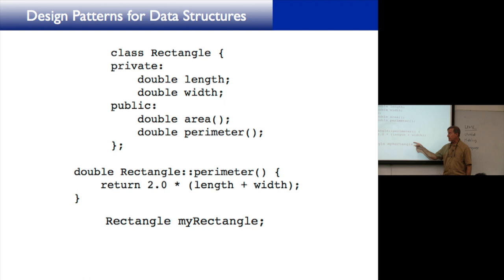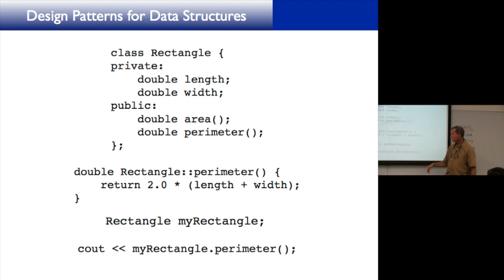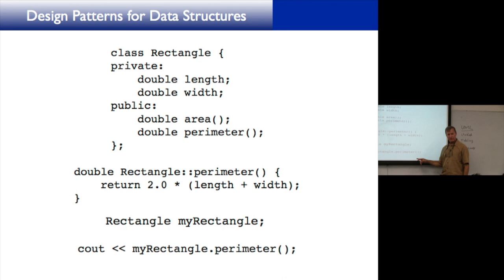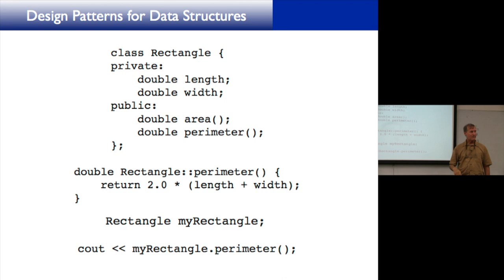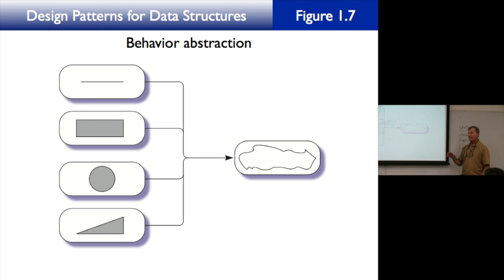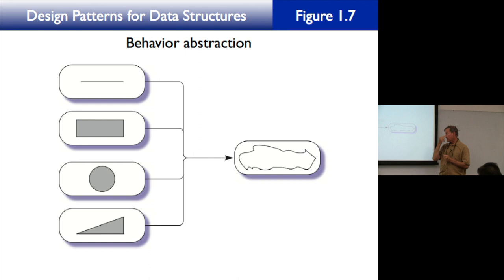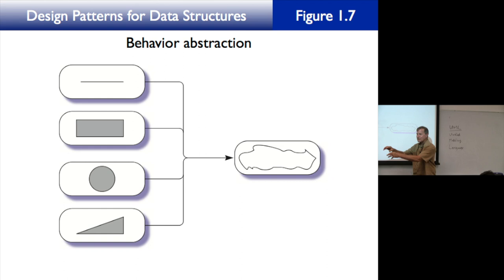One abstract shape could be a rectangle, a circle, a line, or a right triangle. We combine these classes into one abstract class — that's behavior abstraction, the highest level. The UML symbol for this is an open triangle arrow for inheritance. Figure 1.7 shows that Line, Rectangle, Circle, and Right Triangle all inherit from Abstract Shape.